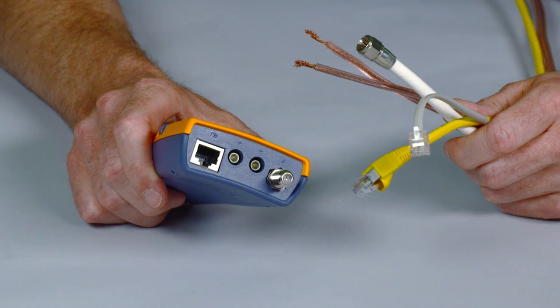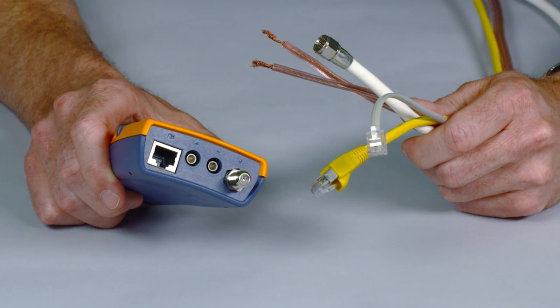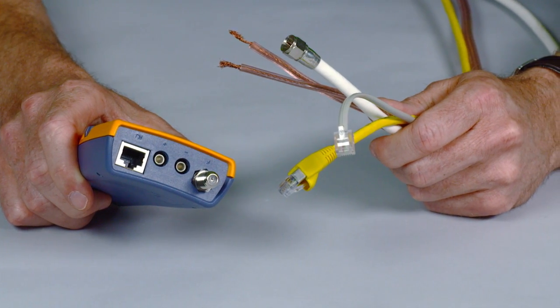I'm Phil Smith, here to tell you about the IntelliTone Pro from Fluke Networks. Power it up, plug in your cable - RJ11, RJ45, coax, even speaker wire. Use the IntelliTone Pro to quickly locate cables and locate individual pairs with a smart tone analog function.